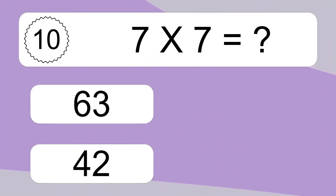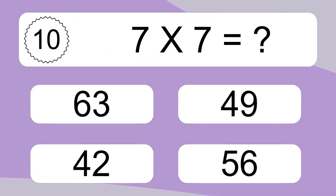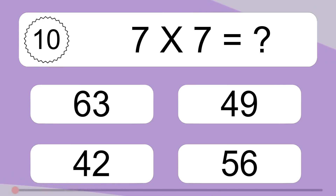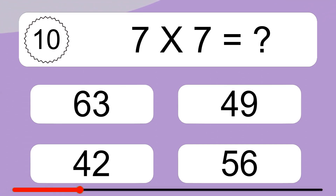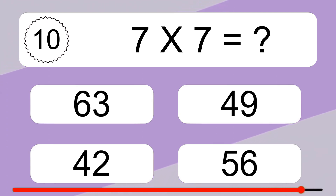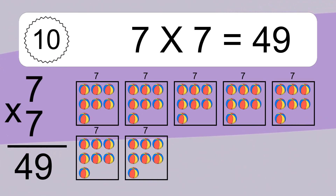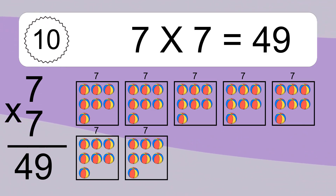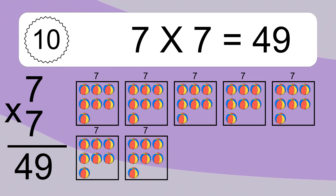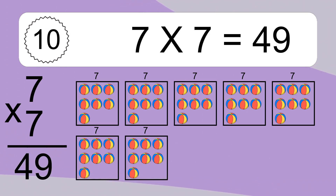7 times 7 equals what? 7 times 7 equals 49. We have 7 boxes, and each box has 7 colorful balls inside. If you count all the balls in all the boxes together, you will have 7 times 7 balls. This equals 49 balls.